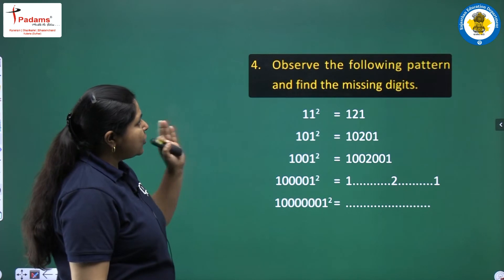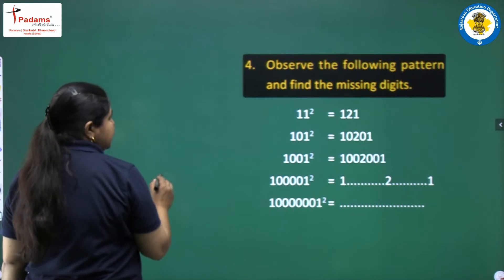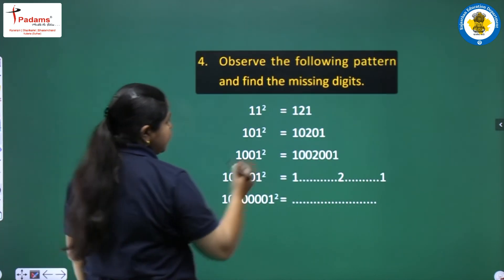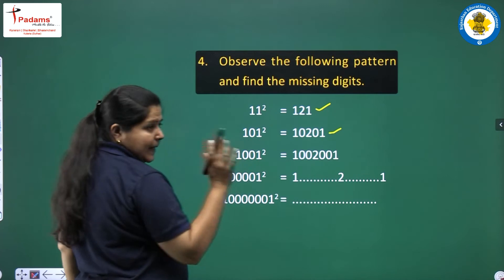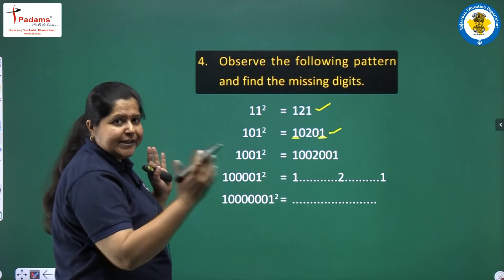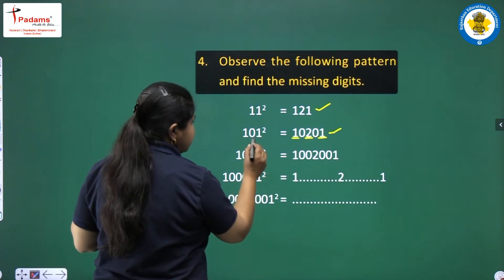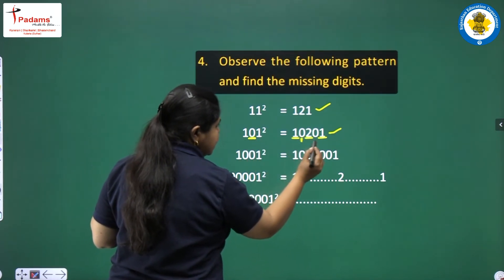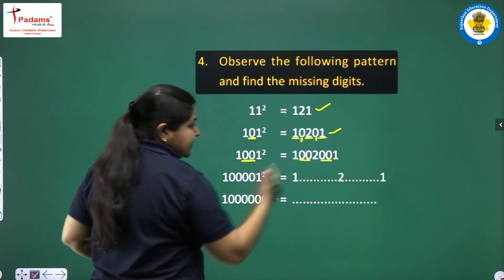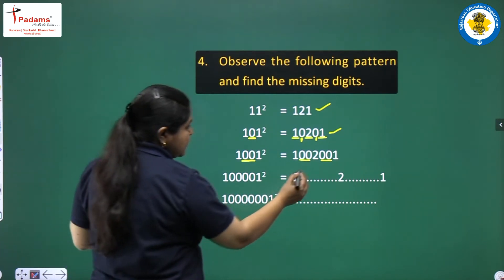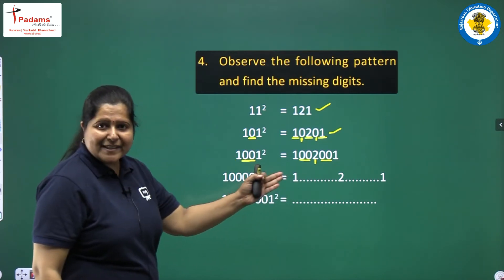Then we have: observe the following pattern and find the missing digits. Just pay attention and observe the pattern hidden here. 11 squared is 121 and 101 squared is 10,201. The pattern: at both extreme points we have 1, in the center we have 2. Between the center and the extremes, there are as many zeros as in the original number.